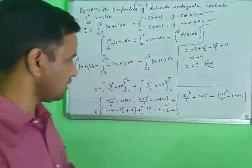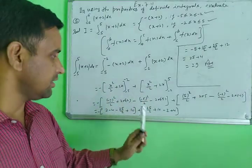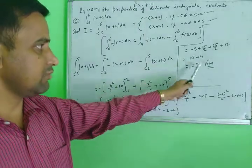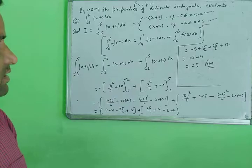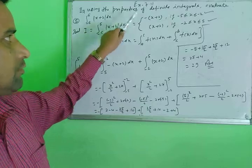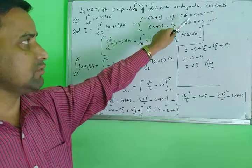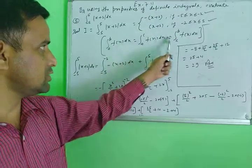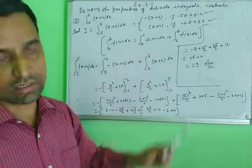Be very careful when calculating upper and lower limits — do not make mistakes in the calculation, otherwise your answer will be wrong. For every modulus function question, first break it into its simplest form, determine in which limit the function is negative and in which it is positive, then write the property, mention which identity you are using, and you will get the correct answer.